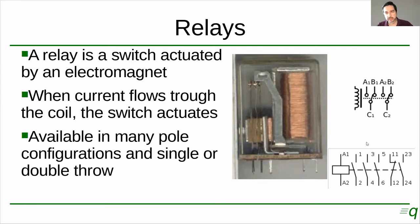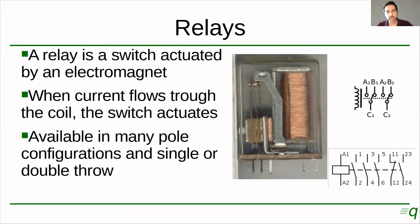This is the symbol, and this is another symbol — you will see either of these two. There are other options which are different variants. What you see here is a double pole, double throw switch. If you remember from our second class, we studied this. The dotted line means that the two switches are connected together mechanically, and this dotted line also extends to the coil, meaning that the coil is actually controlling the switch. So when current flows through the coil, these switches are going to move to the left, to A1 — it's going to connect C1 to A1 and it's going to connect C2 to A2.